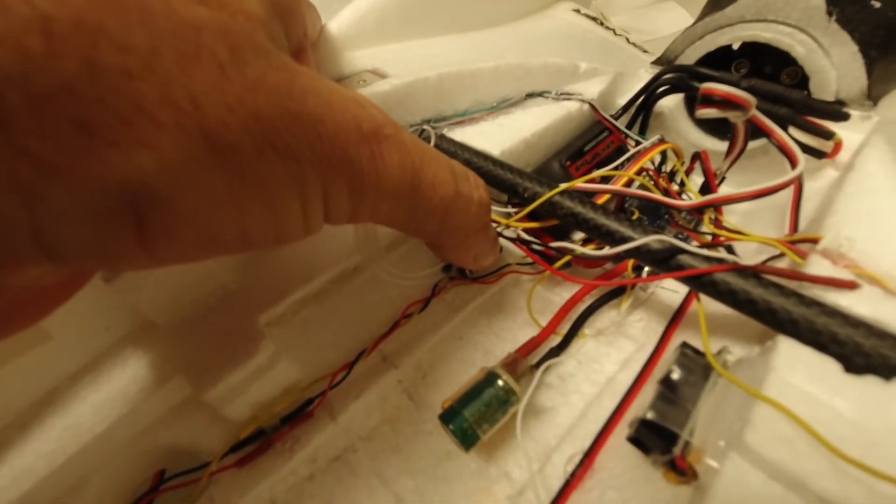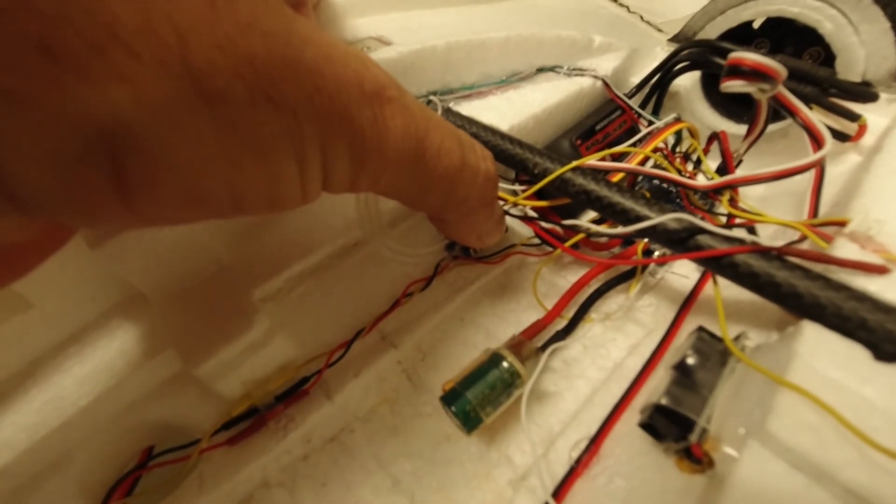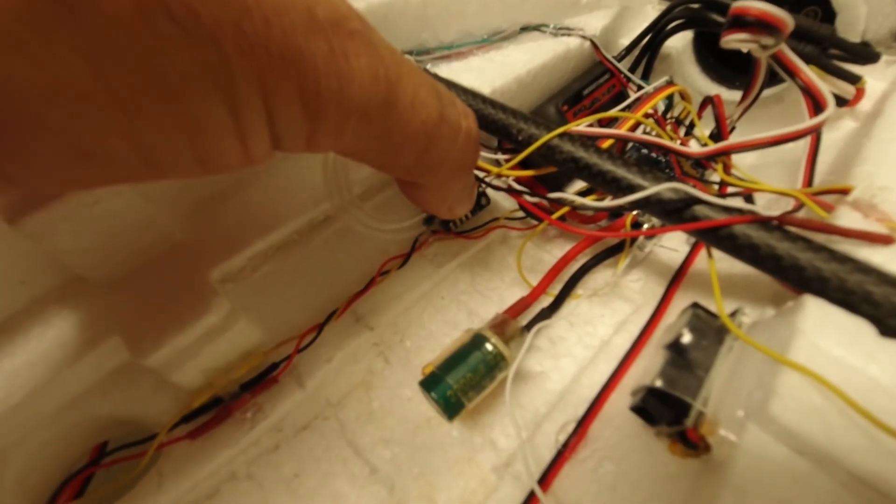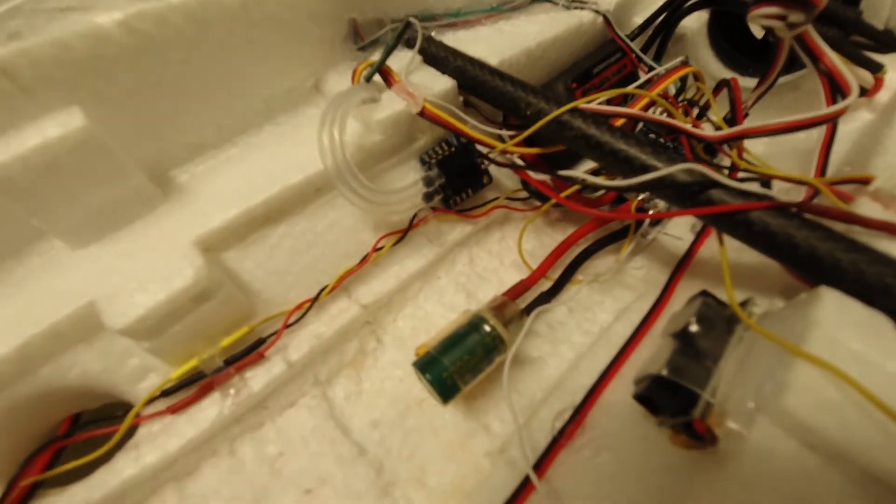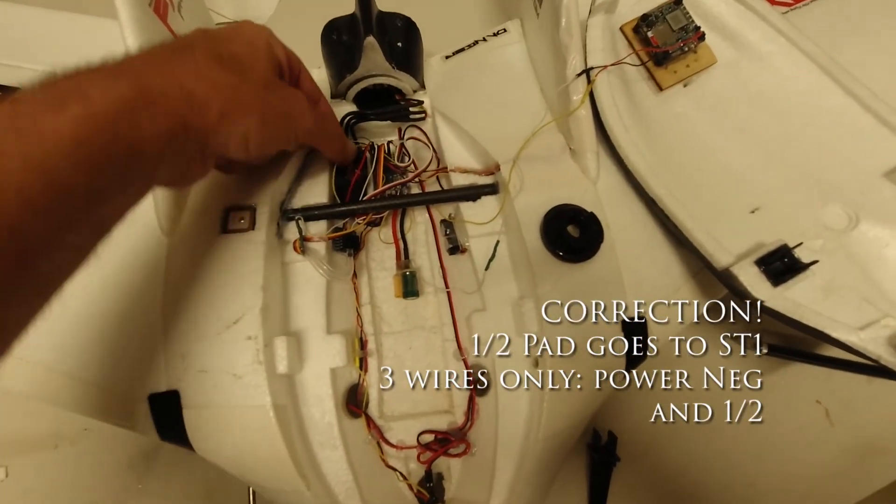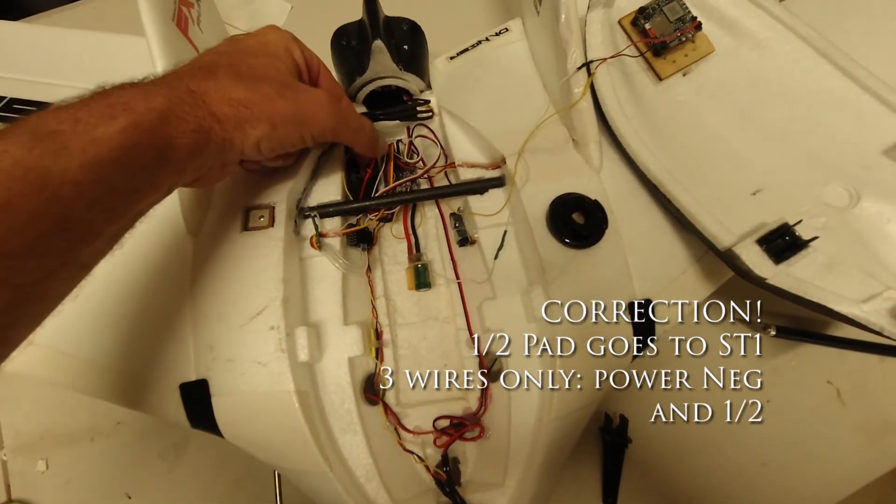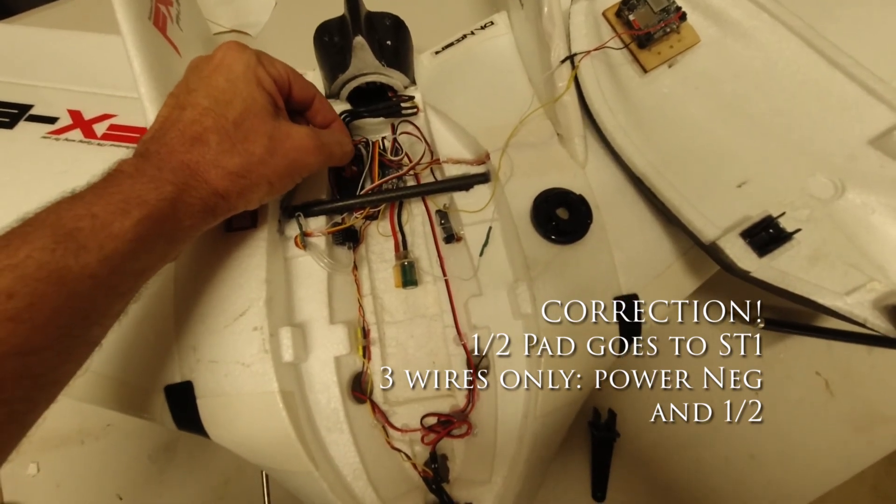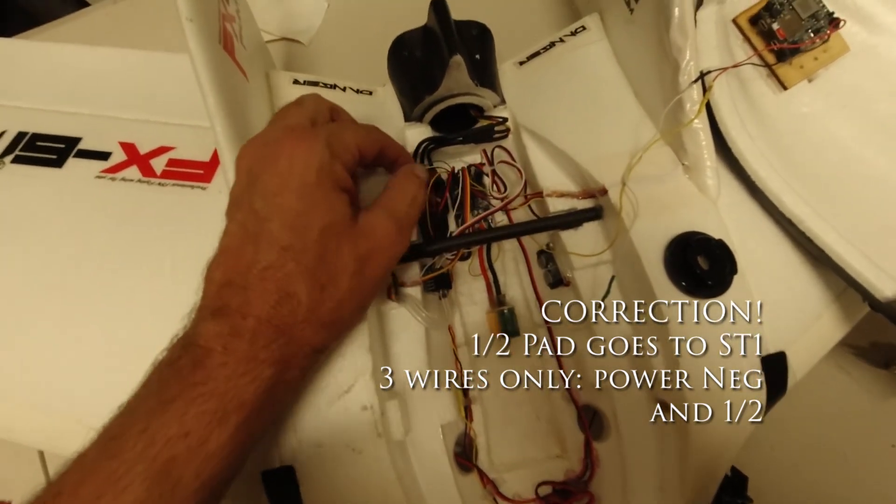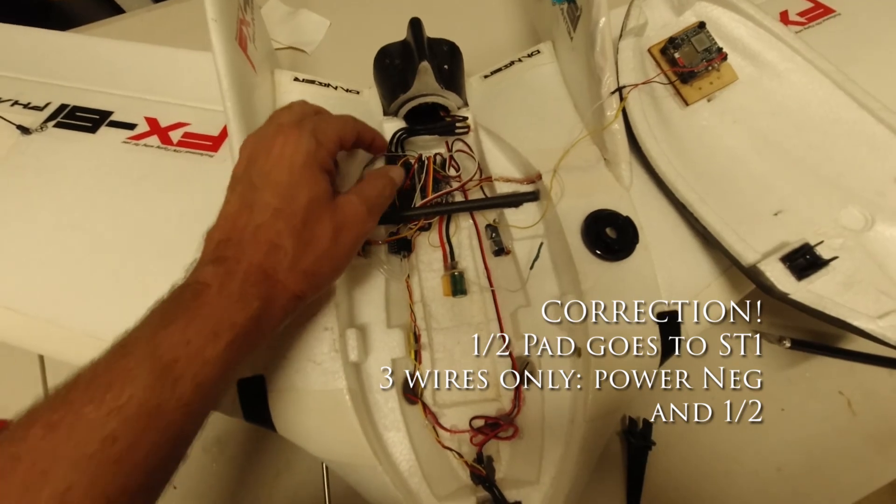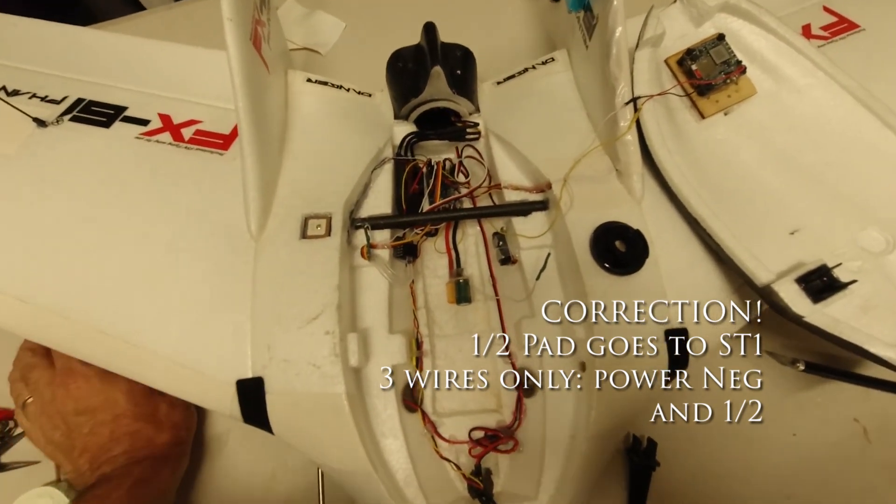So I just hot glued the airspeed module. My signal wire here, which is a yellow one, goes to the S port and the power and the negative, just above the GPS power and negative on the F411.